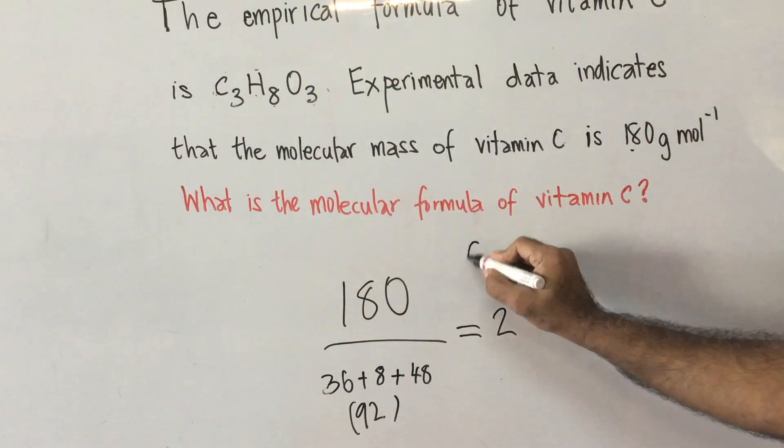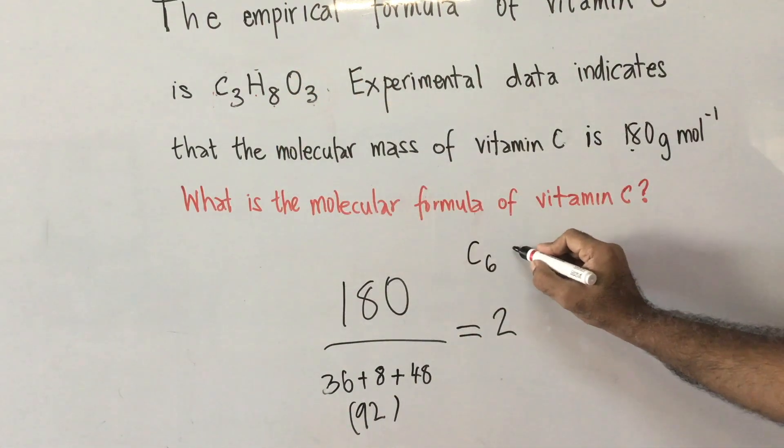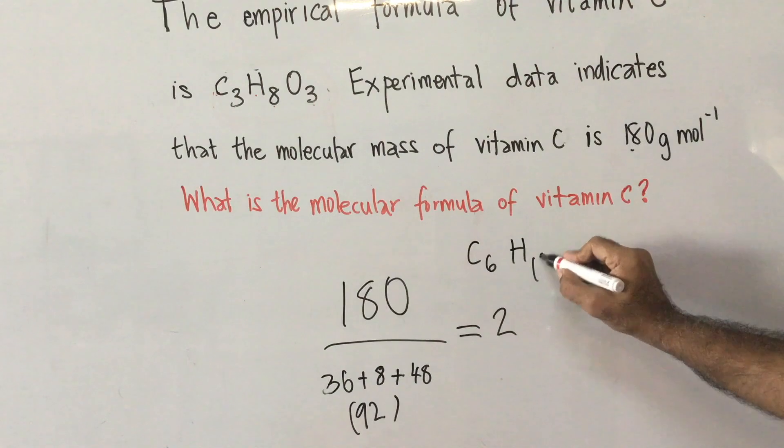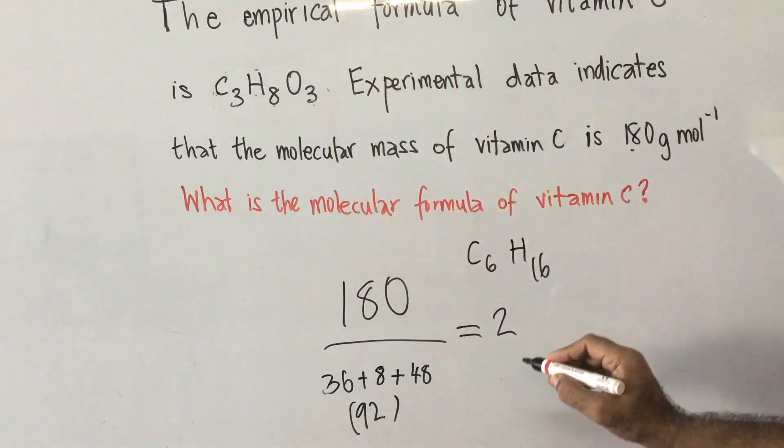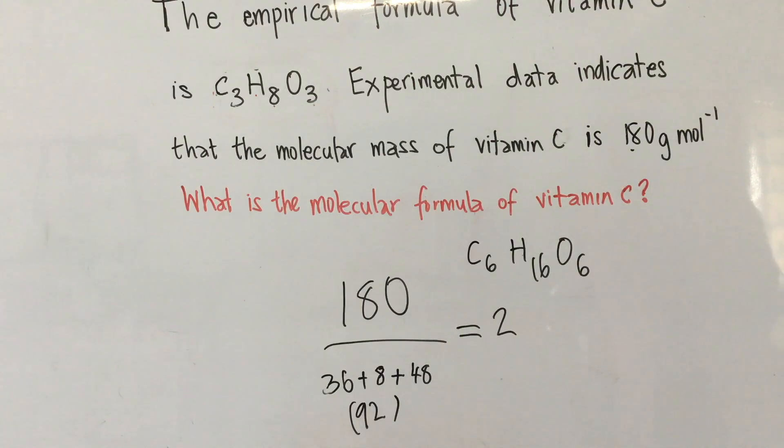3 multiplied by 2 would give you C6. 8 multiplied by 2 would give you H16. And O multiplied by 2 would give you O6. C6H16O6 is the actual molecular formula for vitamin C. And the answer to this question.